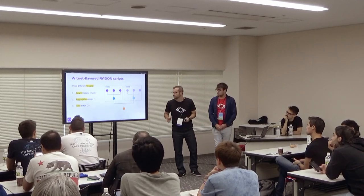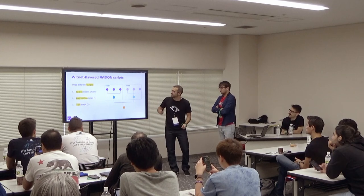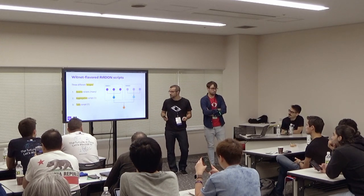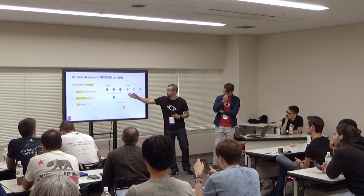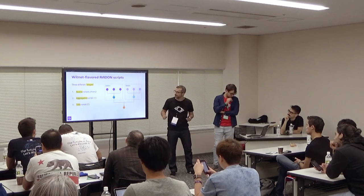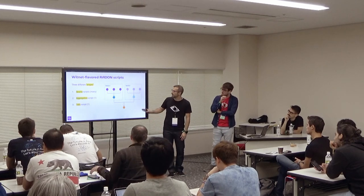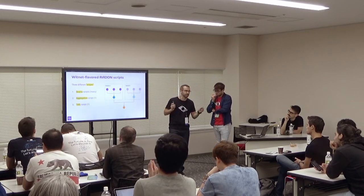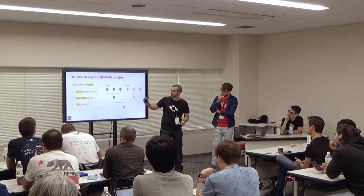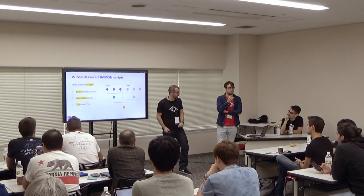One of the cornerstones of Witnet is having multiple sources — to avoid single points of failure and to provide tamper-resistance properties. Radon scripts have three different stages. The first is the source scripts, which relate to the URLs we want to retrieve data from, and there can be many. The second is the aggregation scripts, which aggregate those data points into a single data point — both these scripts are run by the witnessing nodes themselves. Finally, if we have different witnessing nodes retrieving data independently, we aggregate their results using the tally scripts, which are run by miner nodes, not witnessing nodes.